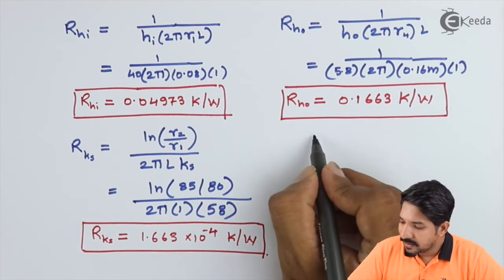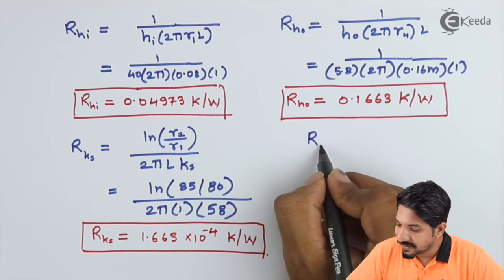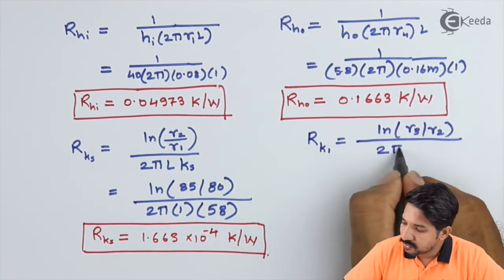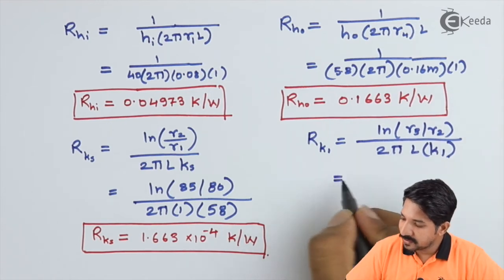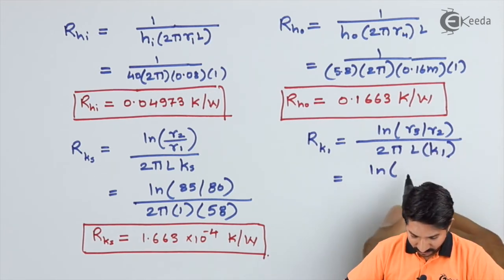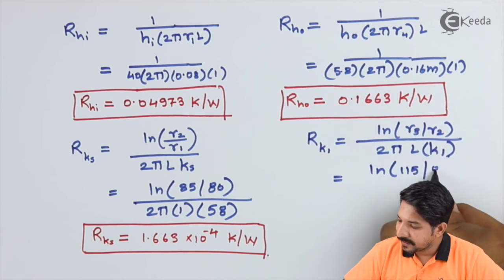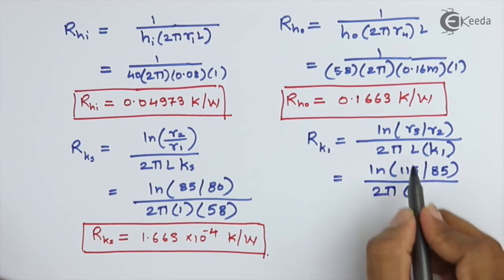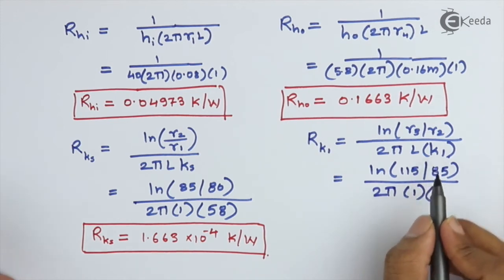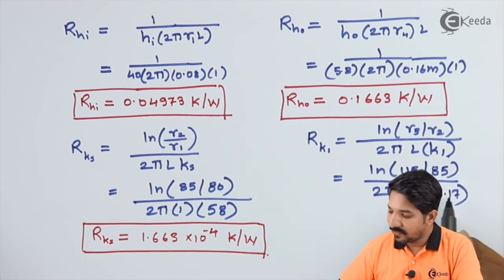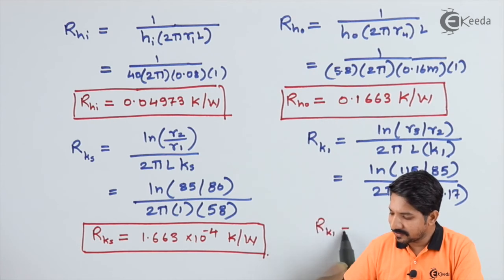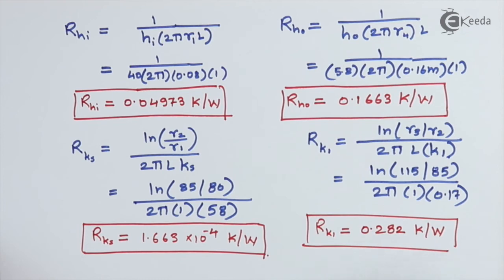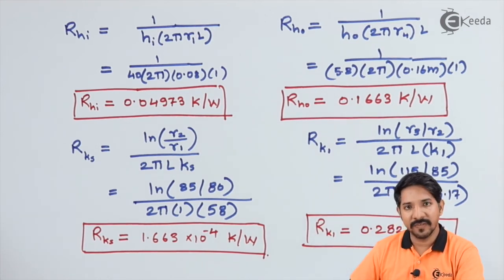Finding RK1 — the thermal resistance offered by the first insulation layer. The formula is ln(r3/r2) / (2π·L·k1). Substituting: ln(115/85) / (2π × 1 × 0.17). Therefore RK1 = 0.282 K/W.